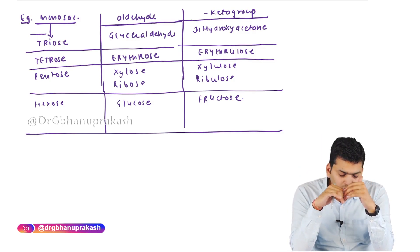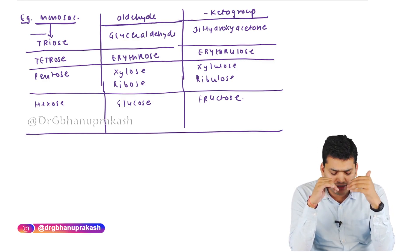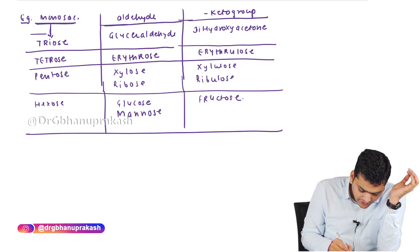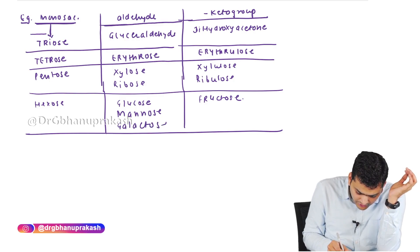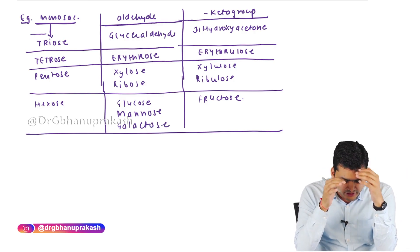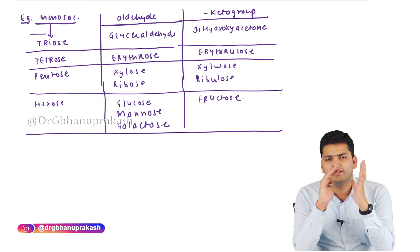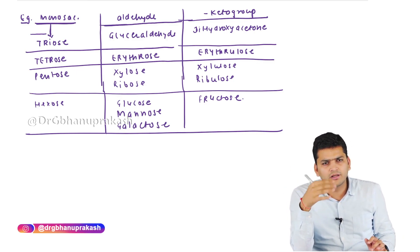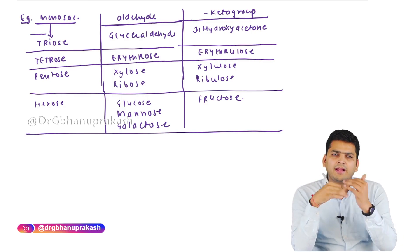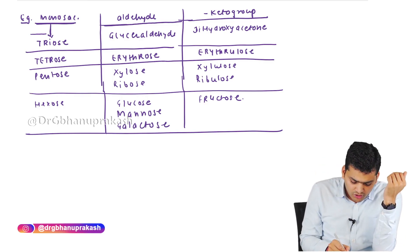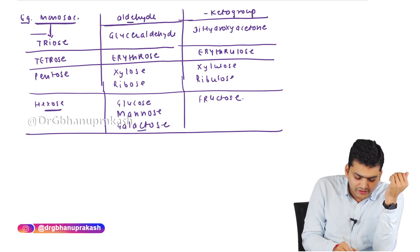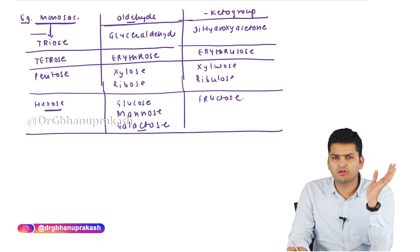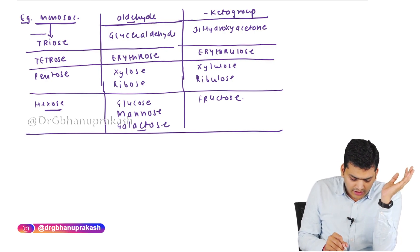Mannose and galactose are both six-carbon sugars with aldehyde as the functional group — same as glucose. This table is important for understanding metabolism: when we say galactose metabolism, knowing it is a six-carbon sugar with an aldehyde group helps us understand its composition and makes the clinical correlations easier.